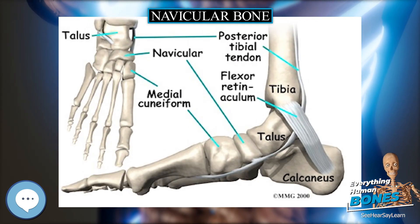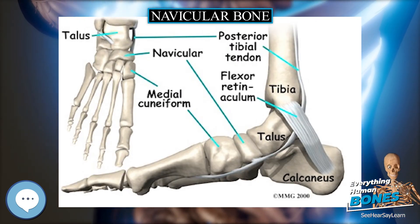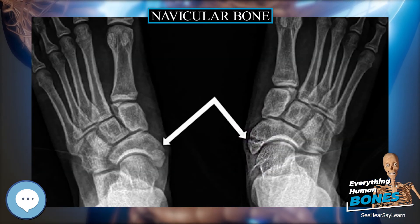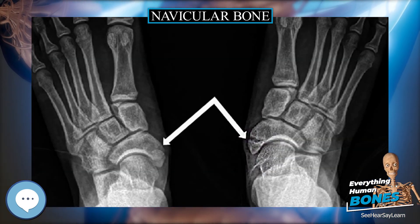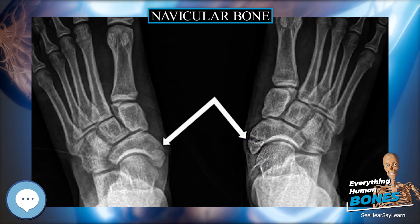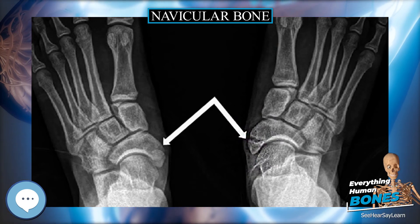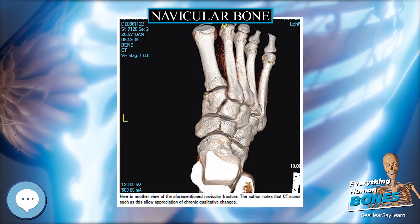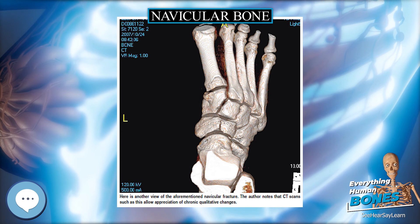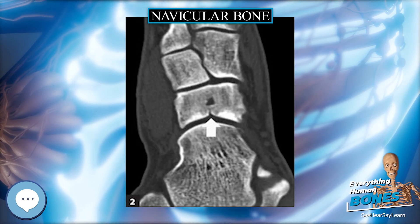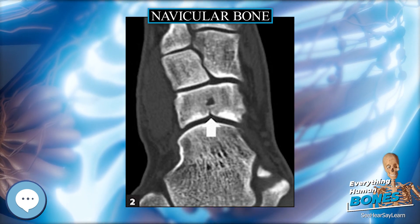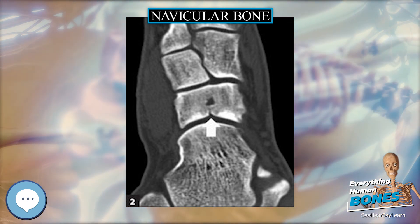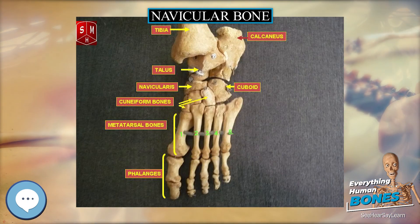Recently, much of the original literature concerning navicular disease has been called into question, particularly the significance of radiographic changes as a sole diagnostic criterion. Navicular syndrome may be responsible for as much as one-third of all cases of lameness in horses, but radiographic changes in the navicular bone do not always provide a definitive diagnosis.